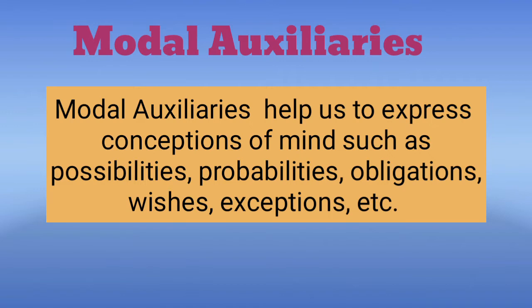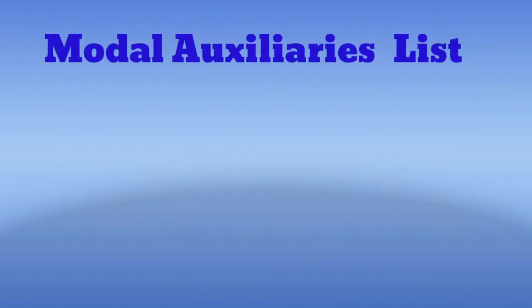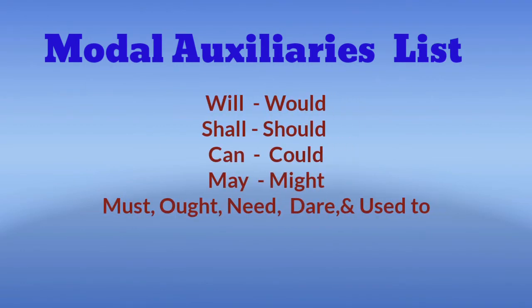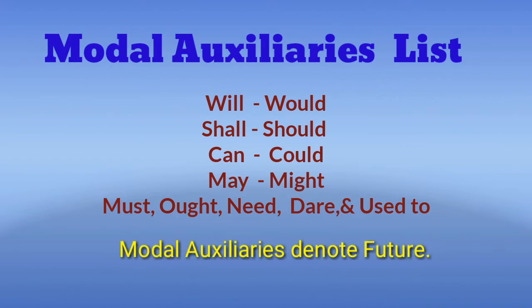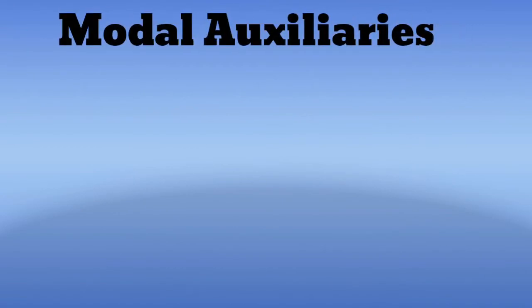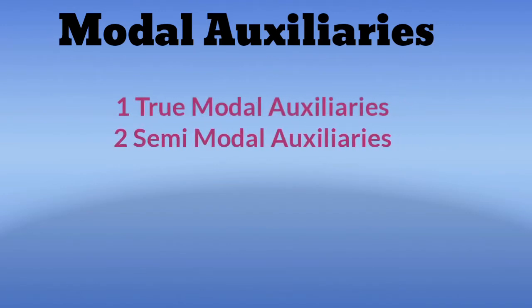I will help you to recollect the modal auxiliaries list: will, would, shall, should, can, could, may, might, must, ought, need, dare, and used to. Remember, modal auxiliaries denote future — which means to express future present and future past. We have a simple classification of modal auxiliary verbs in English: first, true modal auxiliaries, and second, semi-modal auxiliaries. We also have present and past future forms of each.